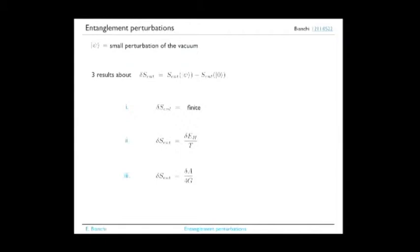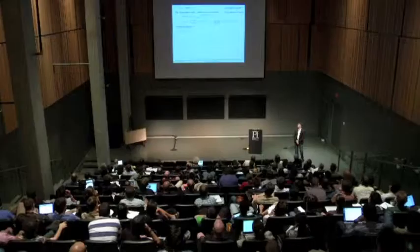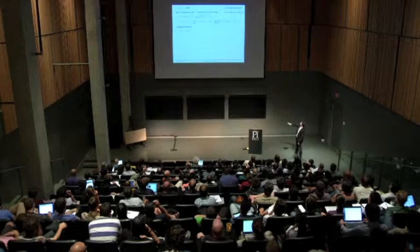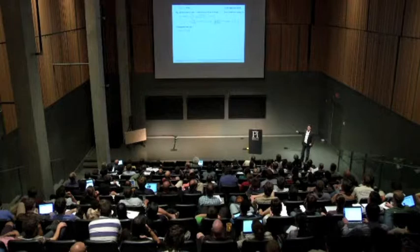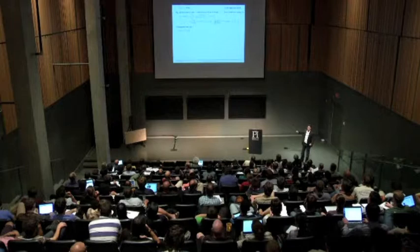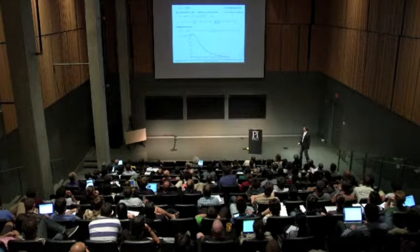Let me give an example of how this delta S_entanglement is finite. In a recent calculation done with Catanesi and Mercati, we considered the one-particle state in Minkowski for a two-dimensional massless scalar field. This one-particle state is in a mode of frequency omega. We compute the entanglement entropy analytically for this state and for the vacuum, put in a cutoff, take the difference, and the difference can be given analytically by a complicated formula that one can just plot—and it is finite.